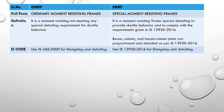Regarding which IS code to use: for ordinary moment resisting frame, we use IS 456:2000 for designing and detailing. Whatever the code mentions for the design process, that is what we follow for OMRF. If we want to design a special moment resisting frame, we need to refer to IS 13920:2016 for designing and detailing.